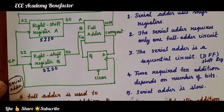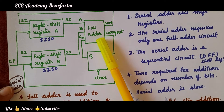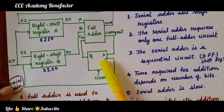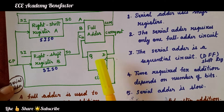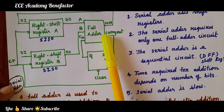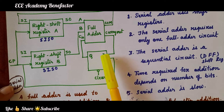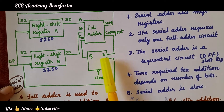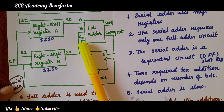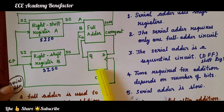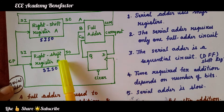Let us understand what this diagram is telling about. A full adder is used to perform bit-by-bit addition, and the D flip-flop is used to store the carry output generated after addition. The D flip-flop can store one bit of information, so it stores the carry out generated after the addition. This stored carry is used as carry in for the next addition. Initially, the D flip-flop is cleared and addition starts with the least significant bits of both register A and B.